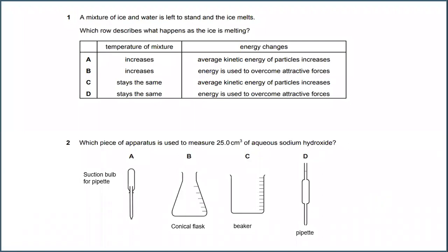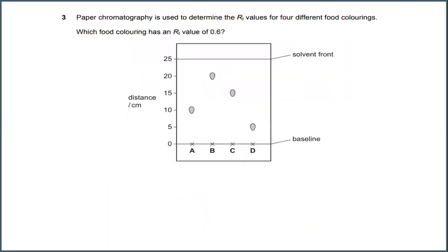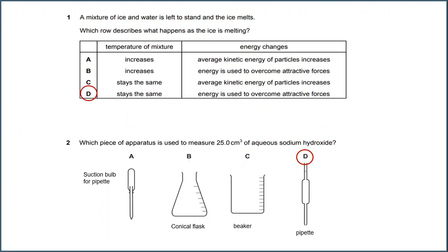Question number 1. A mixture of ice and water is left to stand and the ice melts. Which rule describes what happens as the ice is melting? The answer for this is D. The temperature of the mixture will stay the same, and the energy change is energy used to overcome attractive forces.